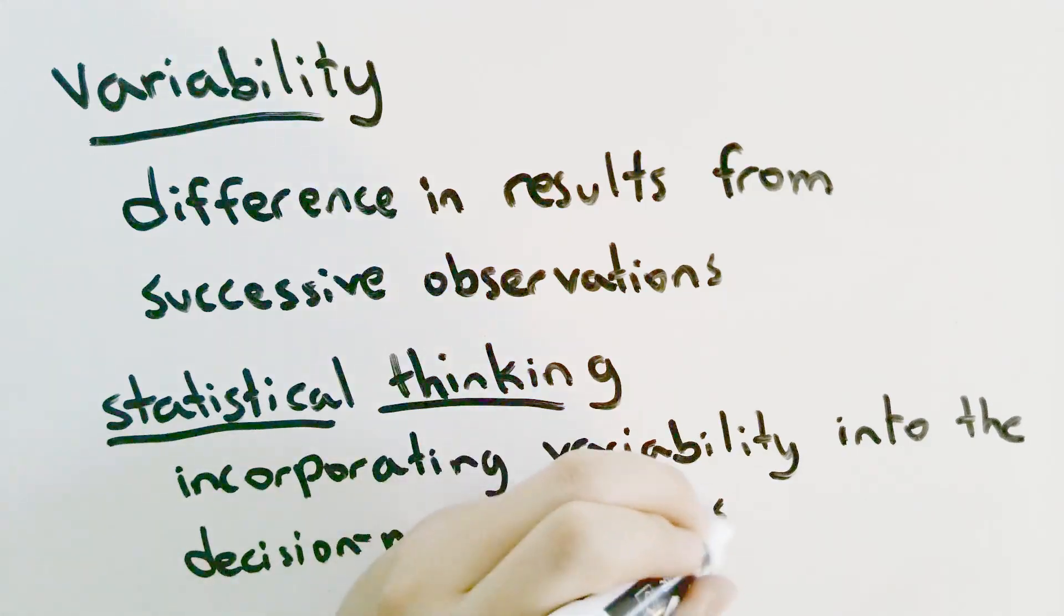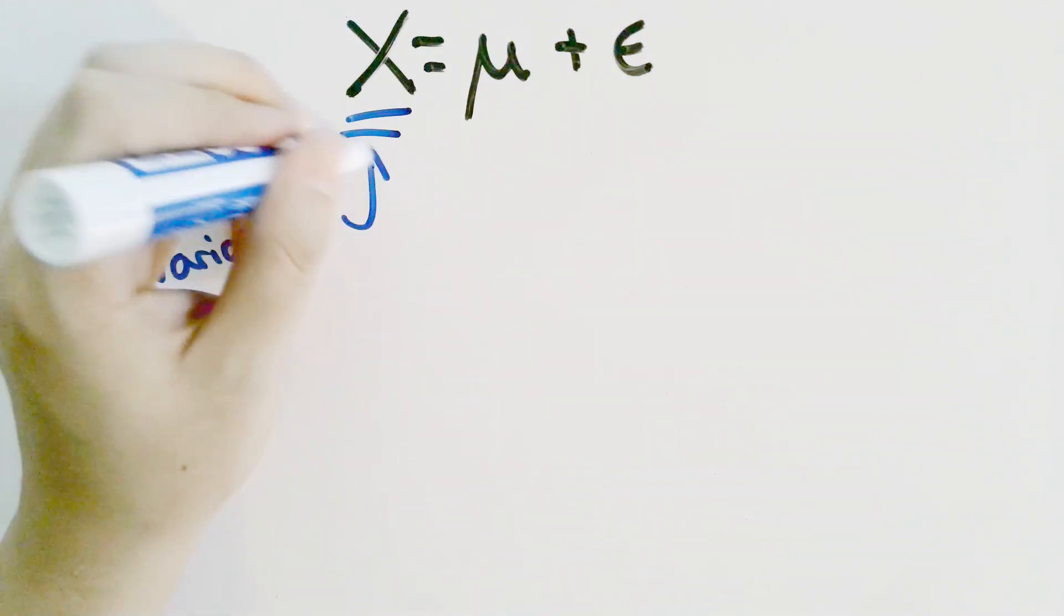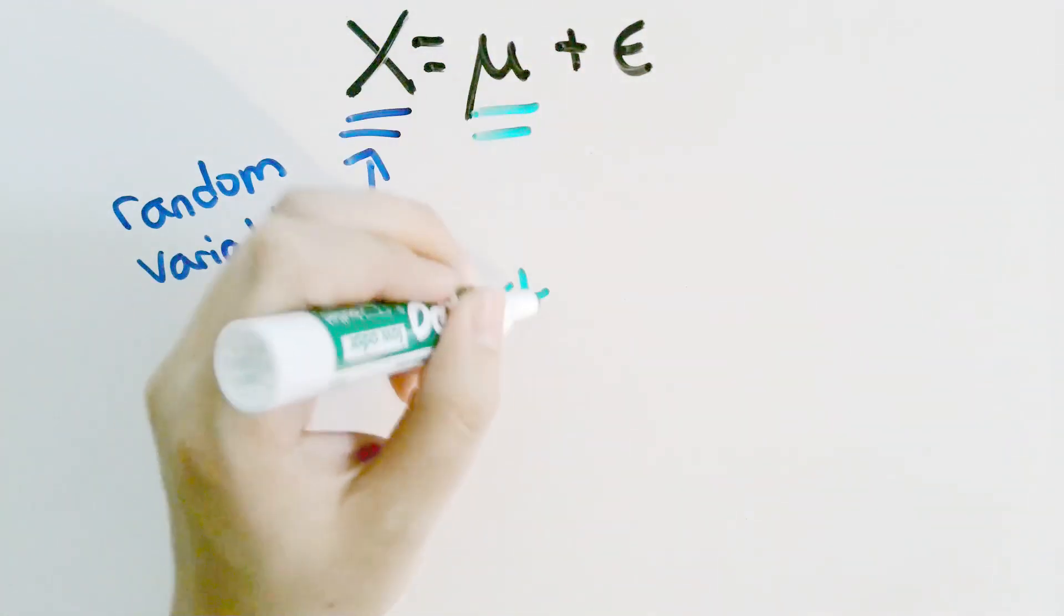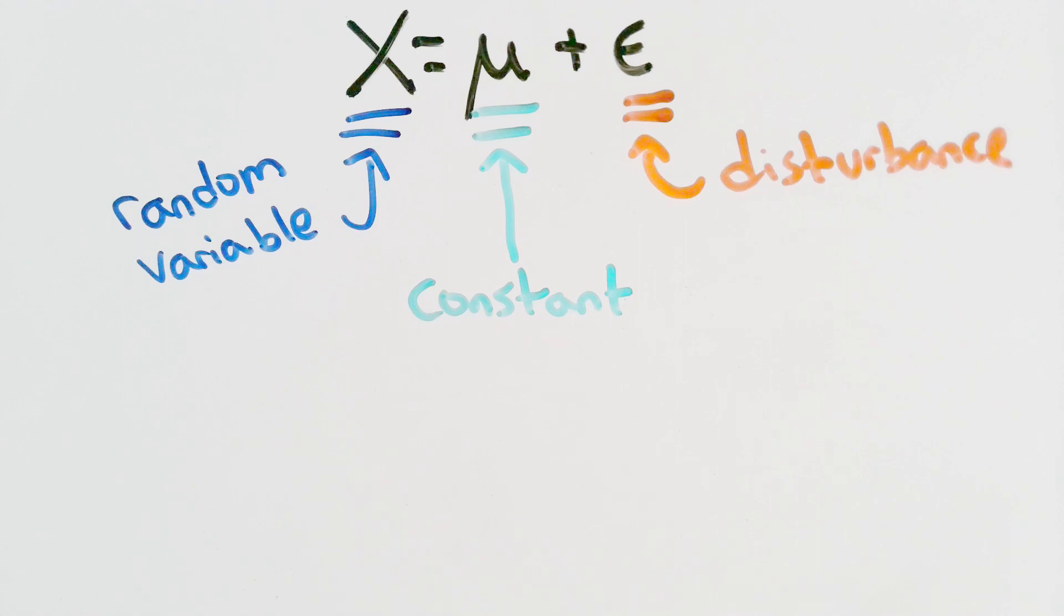One way to apply statistical thinking when it comes to different measurements is to look at them as random variables. A random variable can be defined as the sum of a constant and a random disturbance. With every measurement, the constant remains the same, but small changes in the environment, variance in the test equipment, and other differences will change the value of the disturbance.